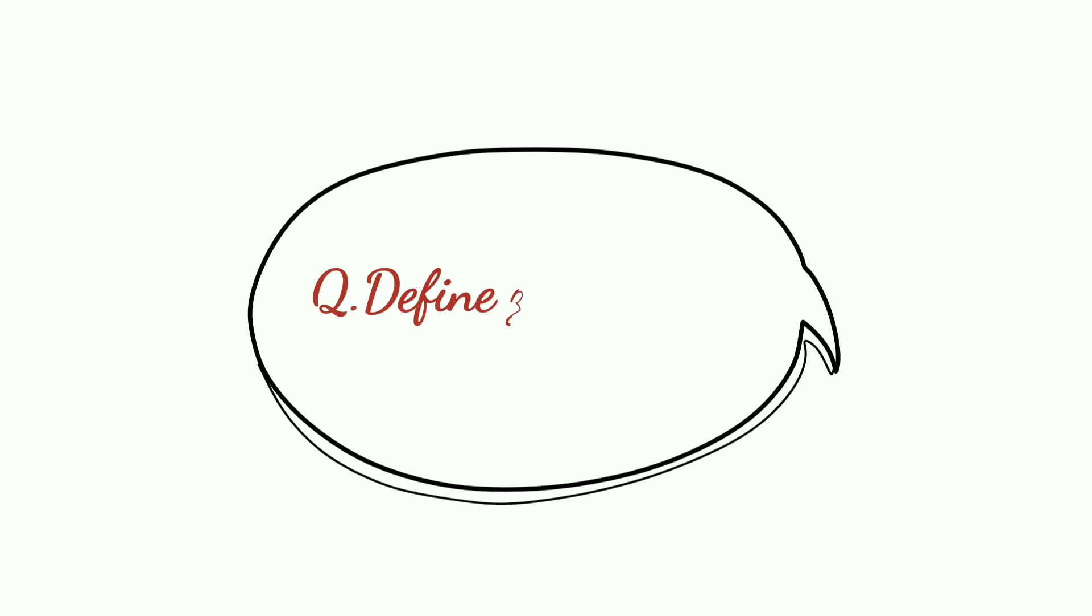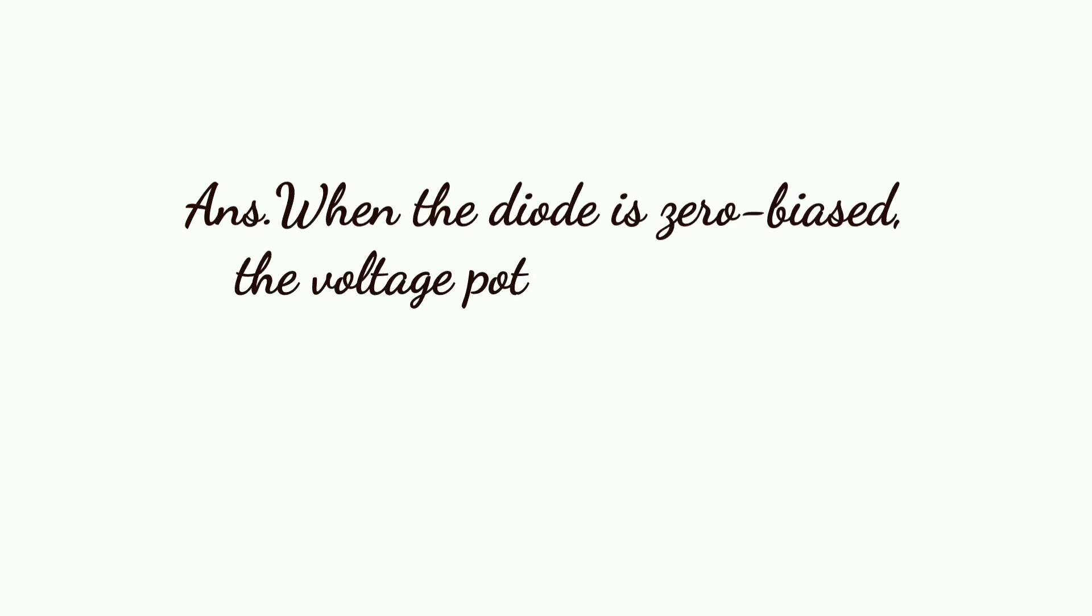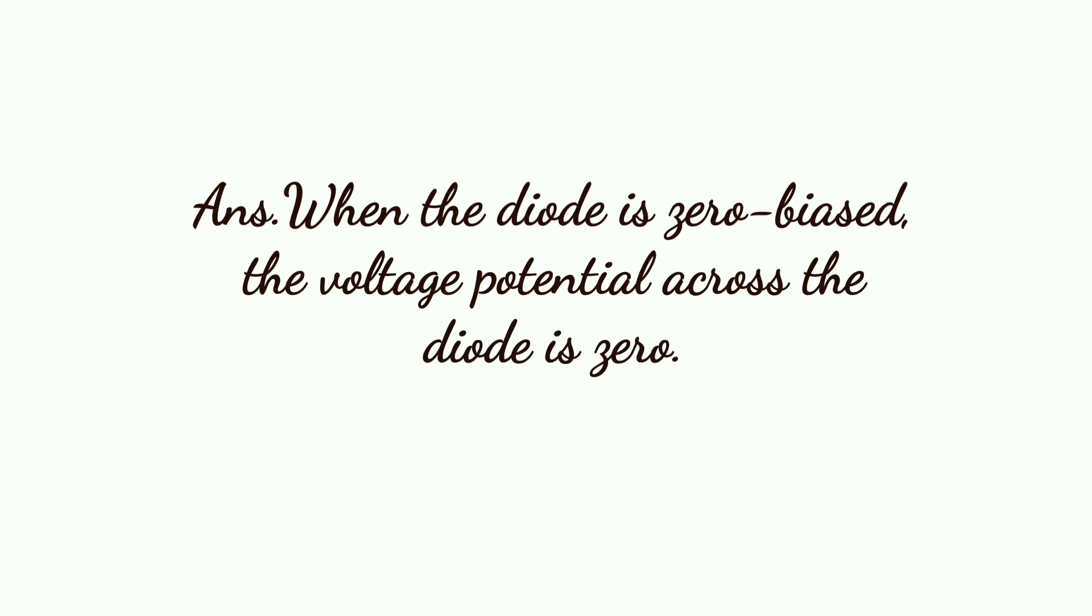Next: Define Zero-biased Diode. When the diode is zero-biased, the voltage potential across the diode is zero.